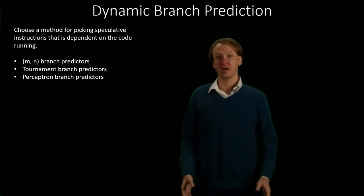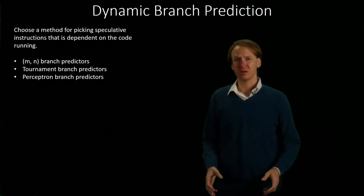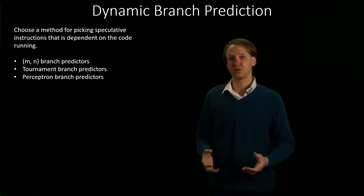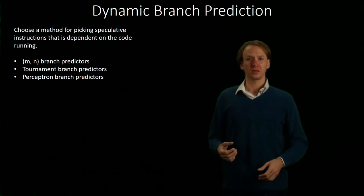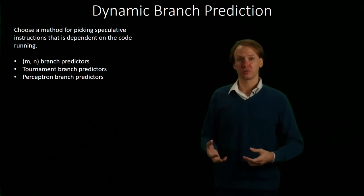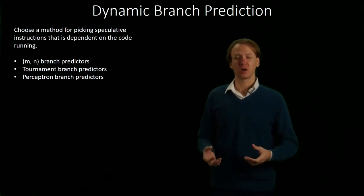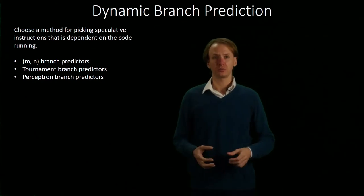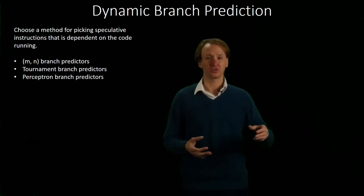In contrast to static branch predictors, dynamic branch predictors look at what the code has actually been doing while it's running. We'll be looking at three different general types of branch predictors. The MN branch predictors are the simplest — they just focus on keeping track of what happened the last time this branch ran.